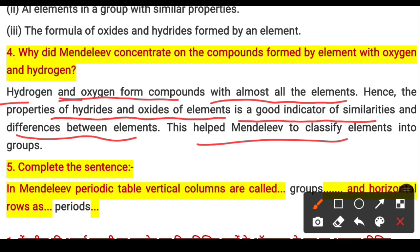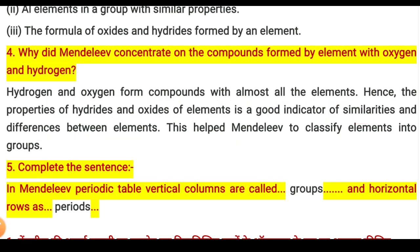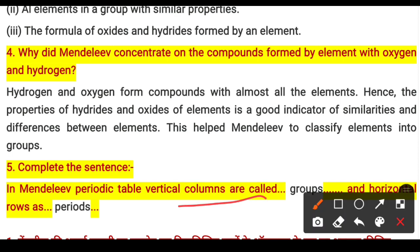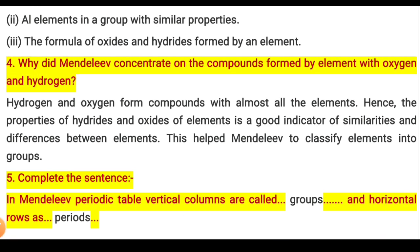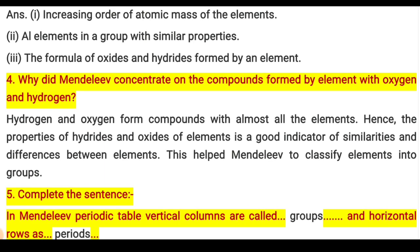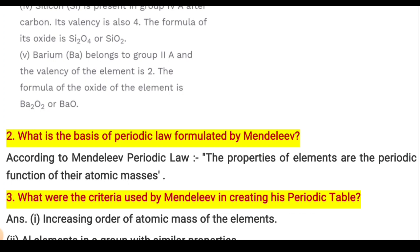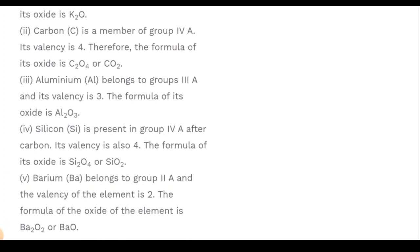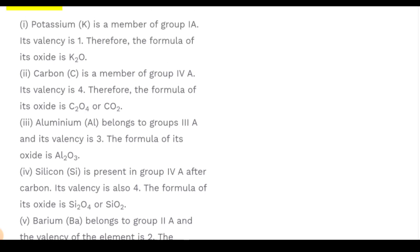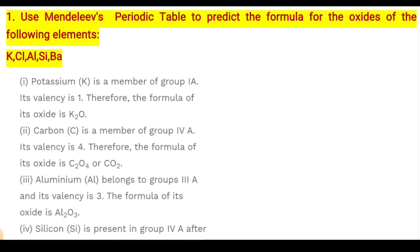Question 5: In Mendeleev's periodic table, vertical columns are called groups and horizontal rows are called periods. You need to fill in the blanks: the first answer is 'groups' and the second is 'periods.' With this, our worksheet is done. Please like this video and don't forget to subscribe to my channel. Stay safe.